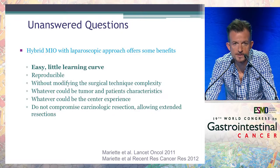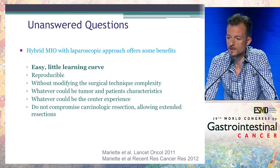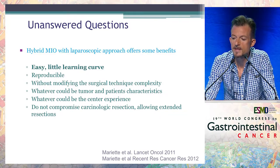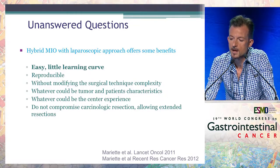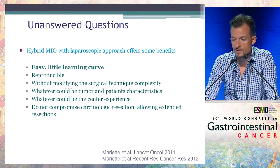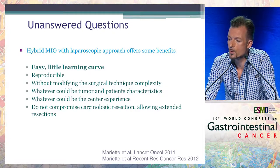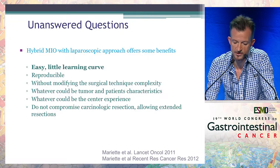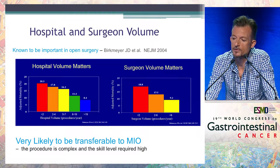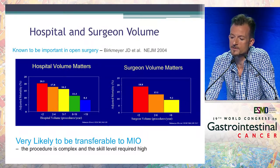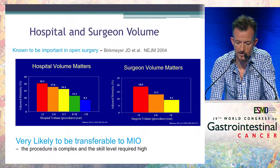Regarding the hybrid approach — laparoscopic gastric mobilization with open thoracotomy, used in the MIRO trial — it also offers benefits. It is probably easier with a shorter learning curve, reproducible, and does not modify surgical technique complexity. It can be performed regardless of tumor or patient characteristics and regardless of center experience. It does not compromise oncological resection, allows extended resection, and allows salvage esophagectomy. Because hospital volume and surgeon volume matter, this technique is very likely to be transferable broadly, which is why we think the hybrid approach should probably be the first step.